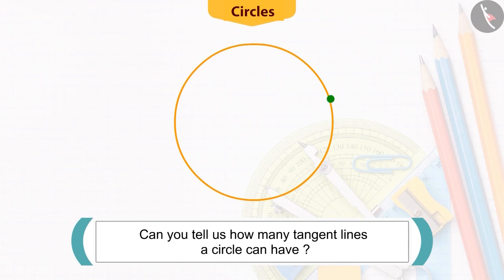You must remember that there is only one tangent at a point of the circle and the circle is a collection of infinite points. Hence, there can be infinite tangents to a circle.